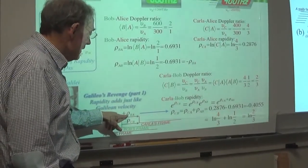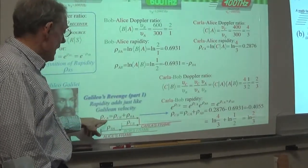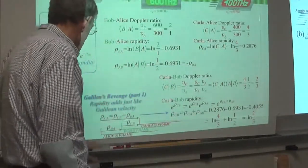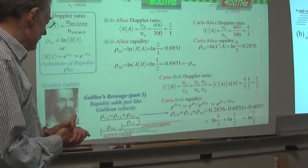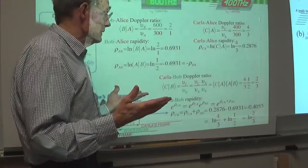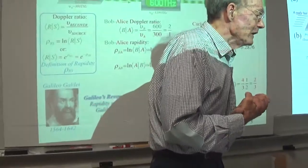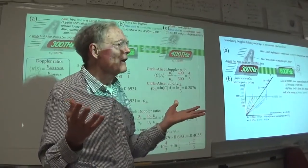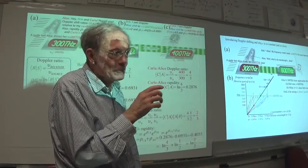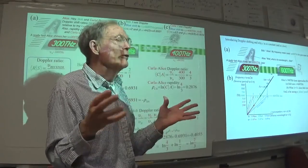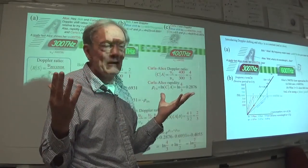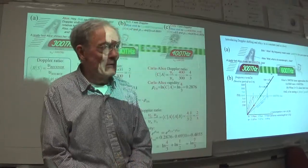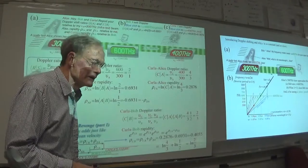Rapidity is very convenient. Rapidity being a logarithm can easily make numbers for you for high energy - like the Hadron Collider, where we consider 0.999999C - that's really hard to do arithmetic with. But if you use the rapidity, it's about seven. Nature does a lot more than that. Every time you put another number on, it's a times e, because we're using that measure. Phasors add just like Galilean velocity, except we're talking angular velocity now.